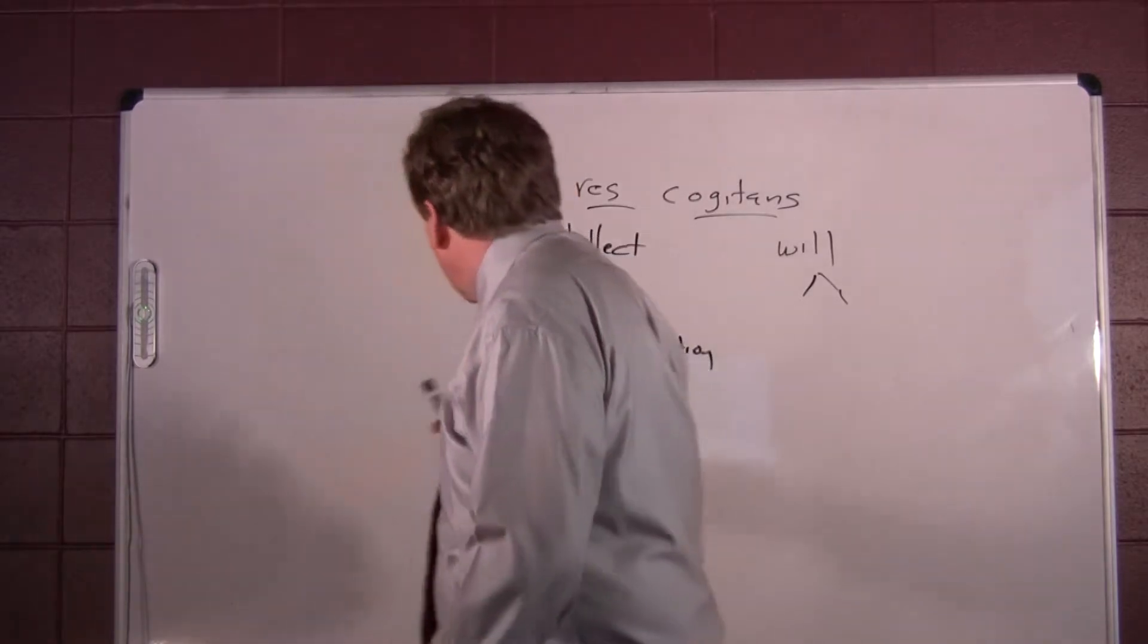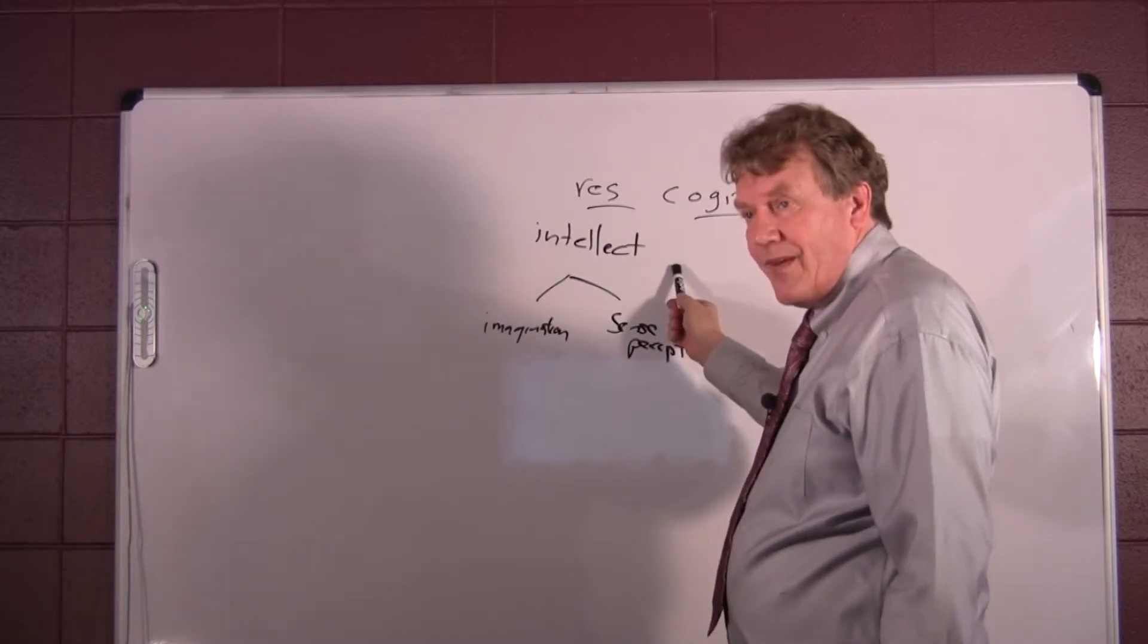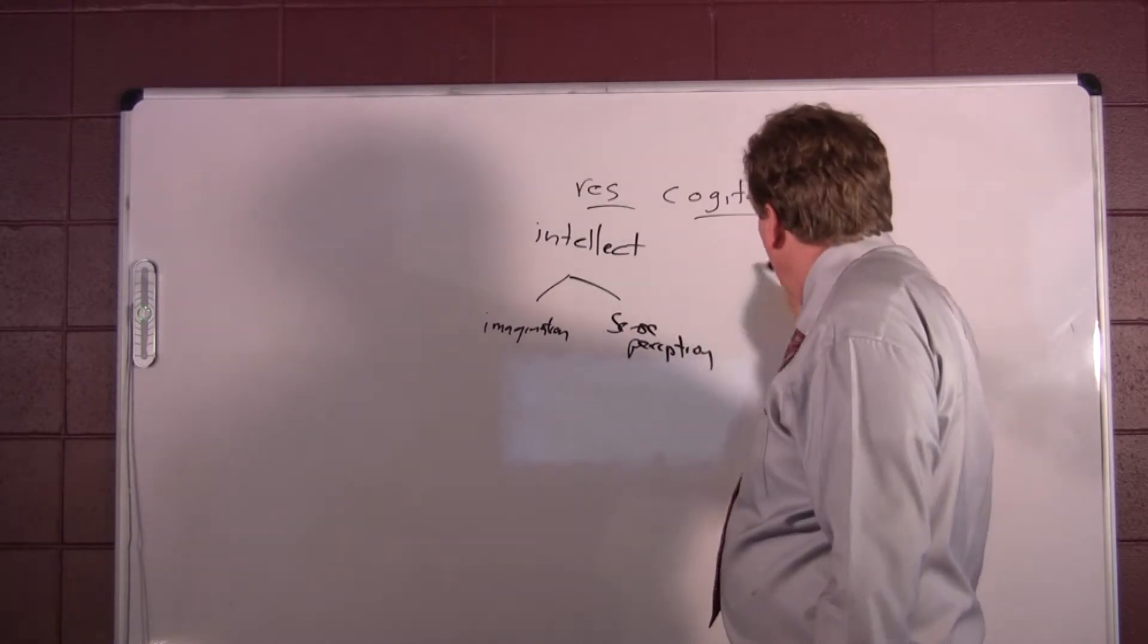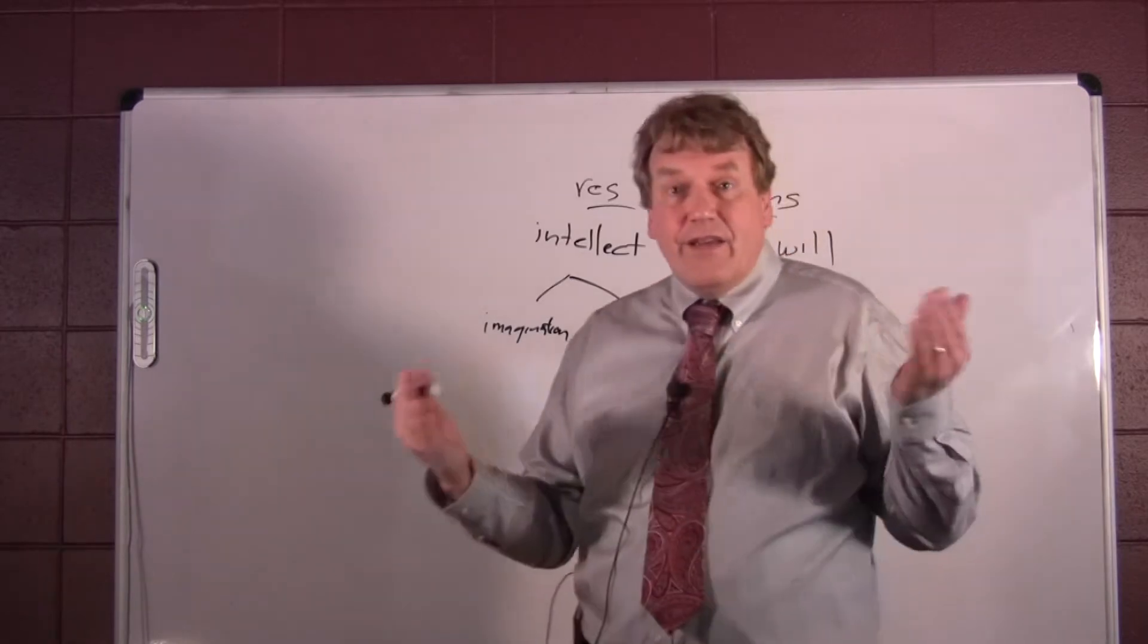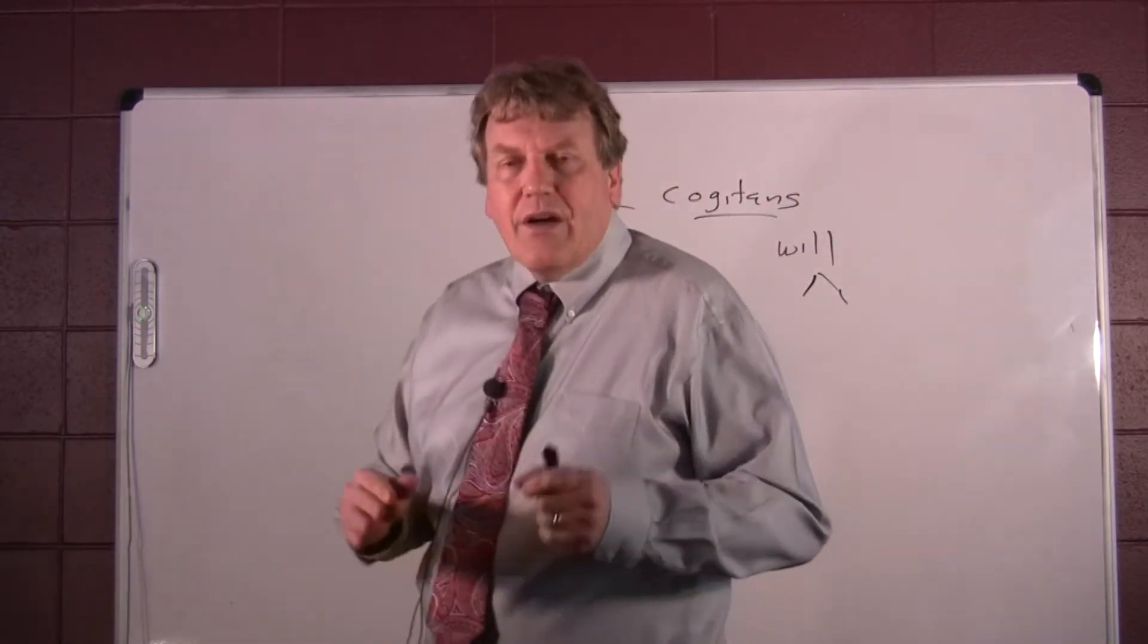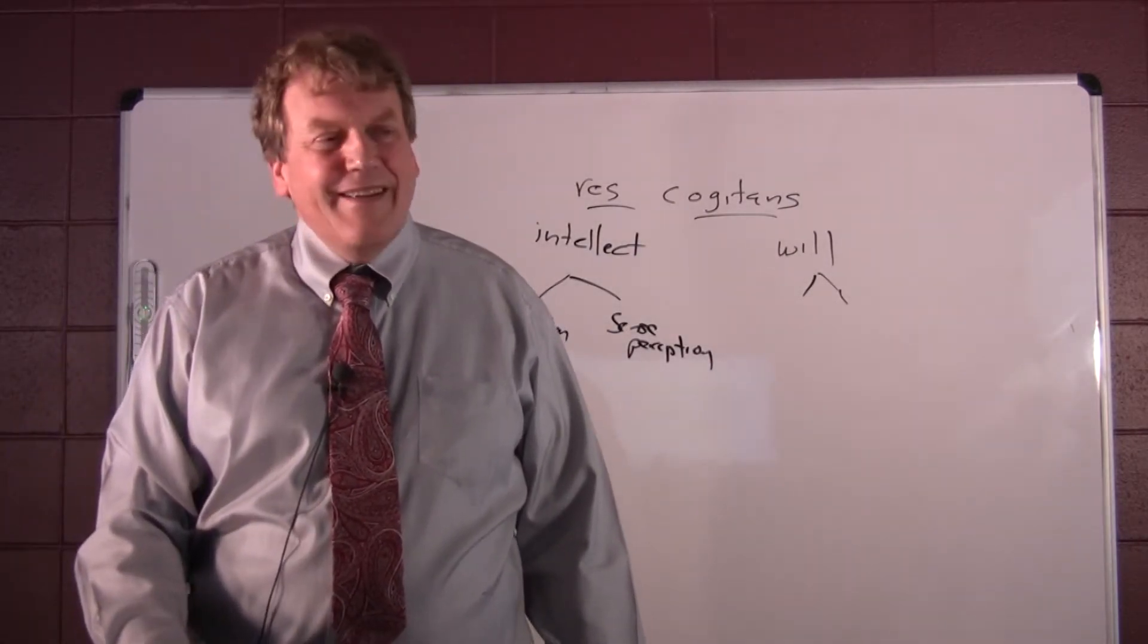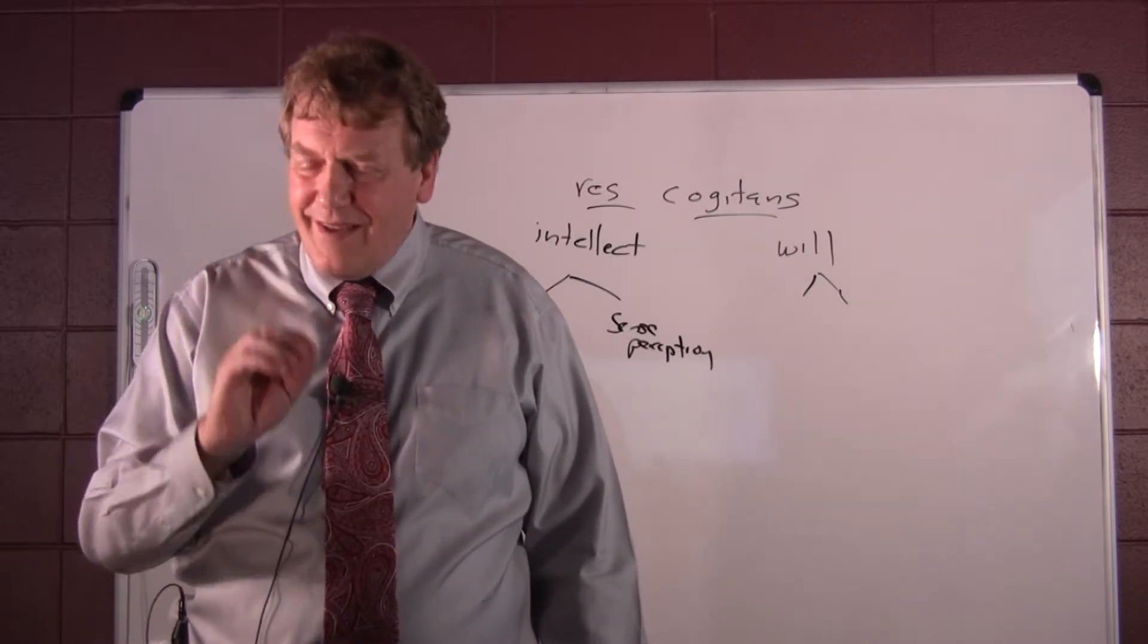Because sometimes the will forms a judgment that is provisional. Did I say the will? The intellect forms a judgment that's provisional, but the will is going to follow it and take hold of it like it's certain. And this is where error arises for Descartes, when the will holds to positions on the basis of less than perfect evidence.